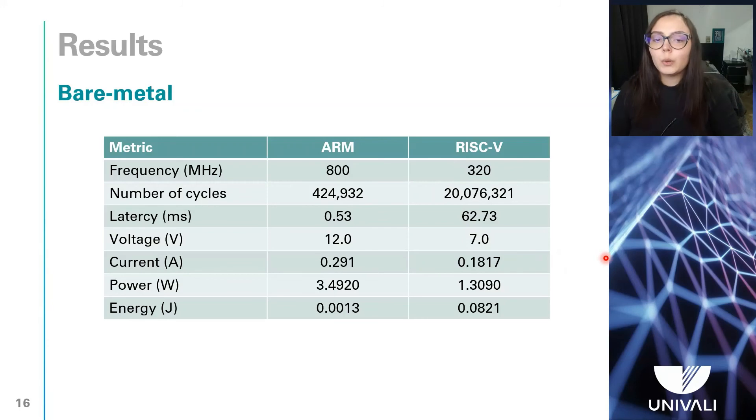On the other hand, as RISC-V processor works at a lower voltage and drains less current, it dissipates 2.66 times less power than the ARM processor. And this feature is essential in small satellite systems due to the onboard power supply constraints.